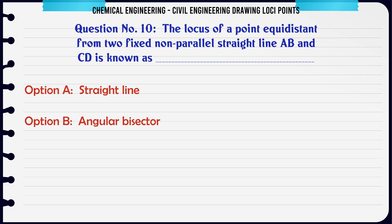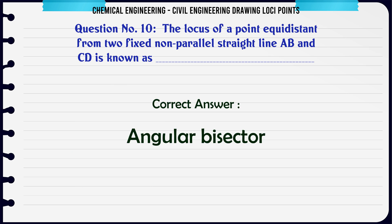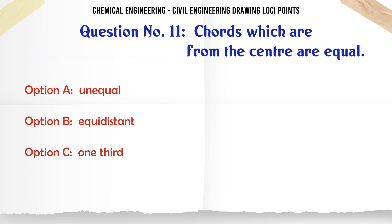The locus of a point equidistant from two fixed non-parallel straight lines AB and CD is known as: a) straight line, b) angular bisector, c) circle, d) perpendicular bisector. The correct answer is angular bisector. Chords equidistant from the center are: a) unequal, b) equidistant, c) one-third, d) two-third. The correct answer is equidistant.